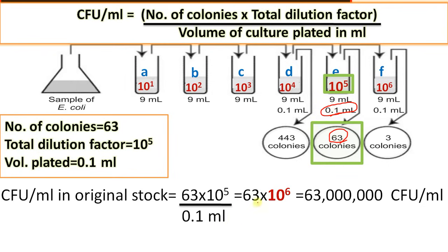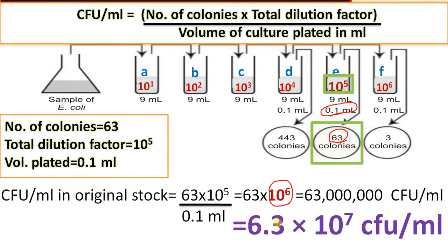Substituting the values: CFU per ml = 63 × 10^5 / 0.1, which gives 63 × 10^6. The 0.1 ml volume represents a further 10-fold dilution, making the effective dilution 10^6. The answer is 63,000,000 CFU per ml of original stock, or written scientifically, 6.3 × 10^7 CFU per ml. This is how we calculate the CFU per ml of the original stock.